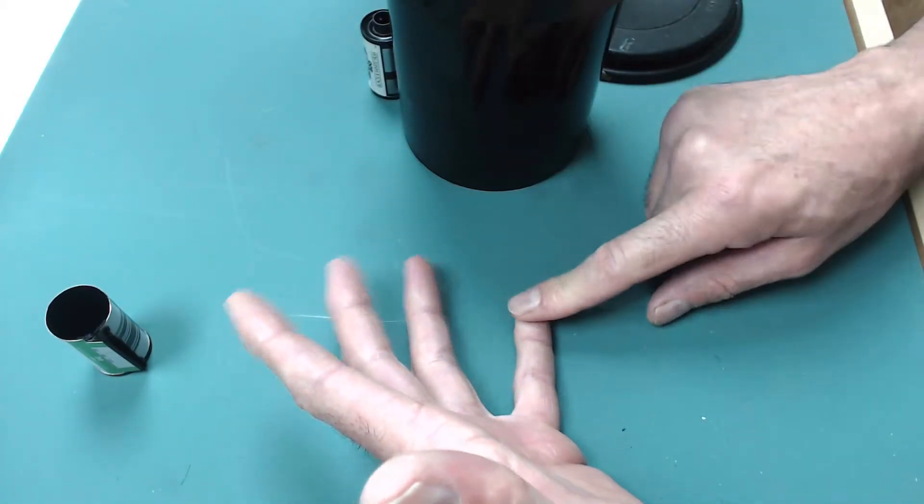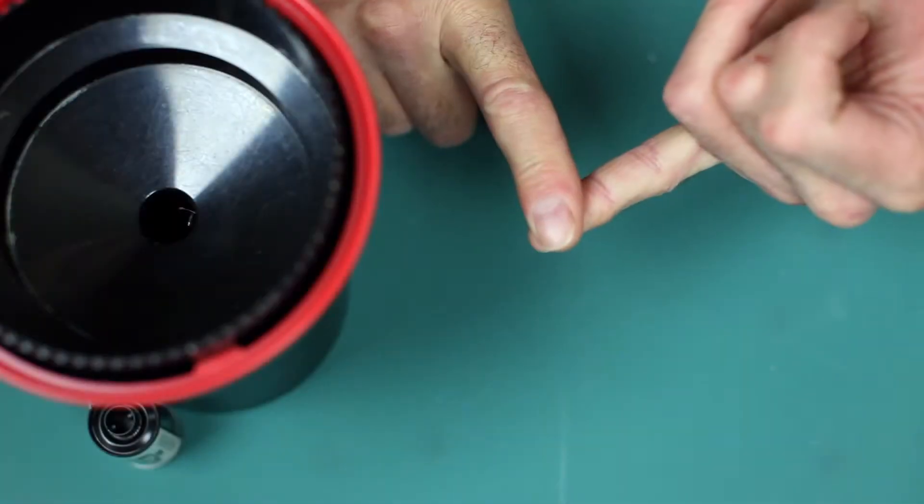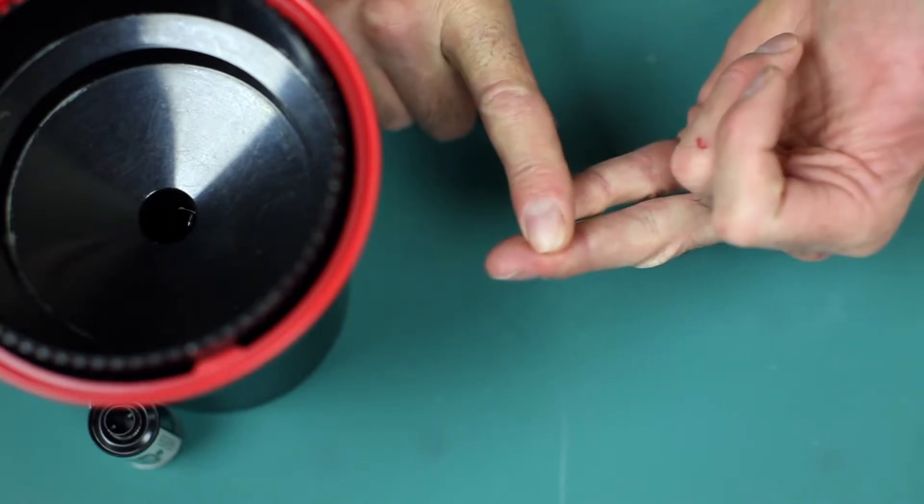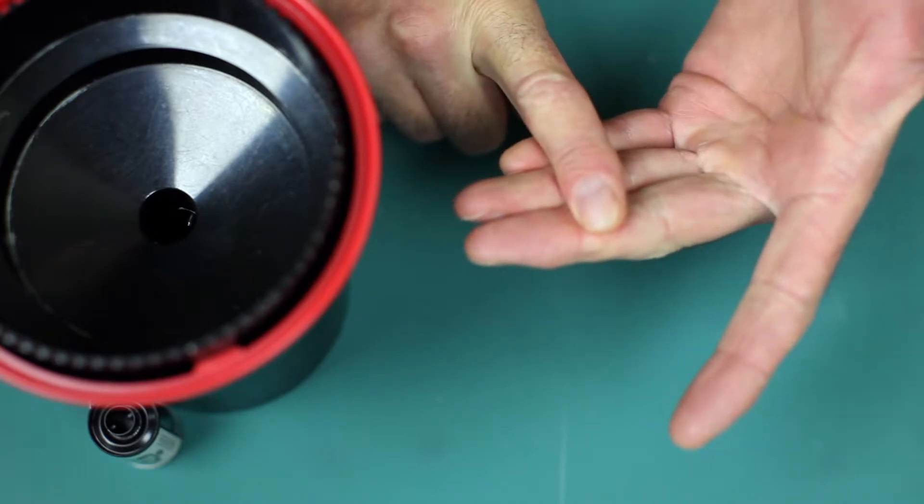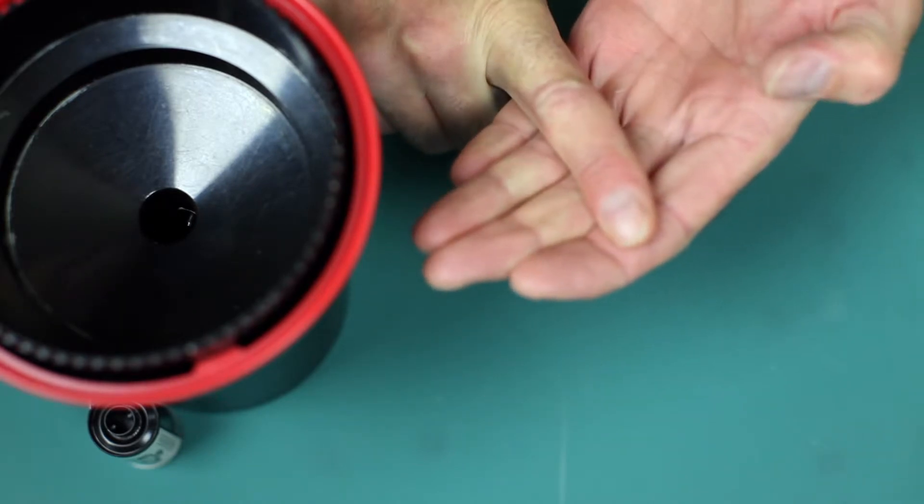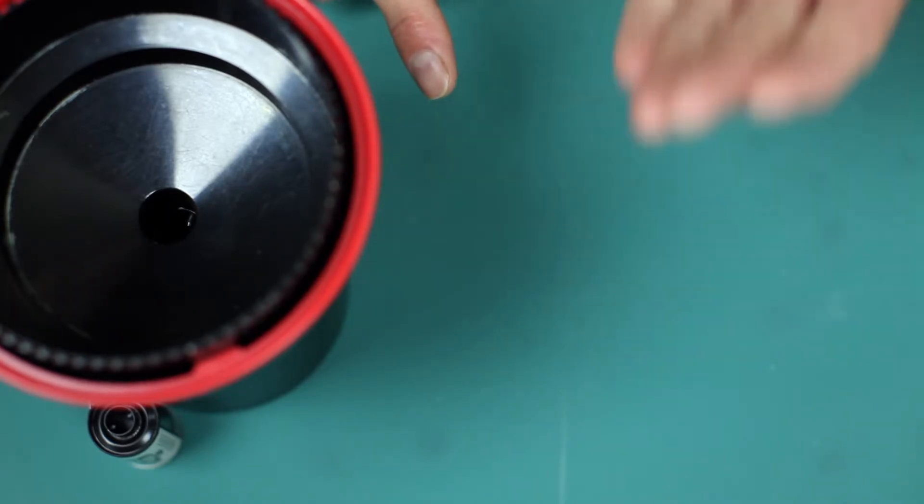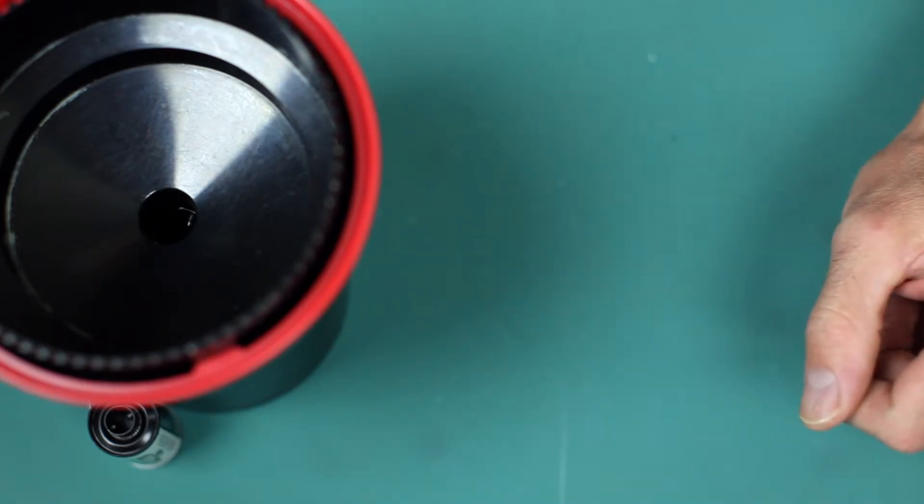You need the developer in there at the right concentration or dilution. You need it in at the right temperature, which for black and white is 20 degrees centigrade, and you need it in for the right amount of time and the right amount of agitation. Those four key factors will determine the amount of development that your film has.